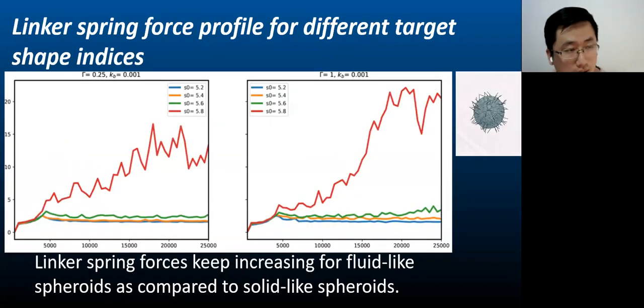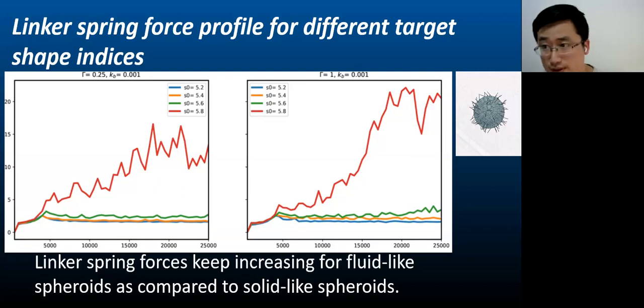Next, we further plot the linker spring force profile for different target shape indices. Again, for fluid-like spheroids, the linker spring force keeps increasing as a function of the simulation time, which is different than the behaviors of the solid-like spheroids. This means for fluid-like spheroids, more activity, more interaction between cells and the surrounding fibrous networks. So the linker spring force keeps increasing.